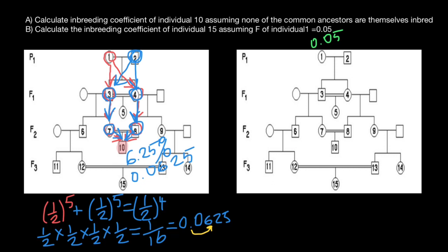We are now doing our calculations for individual 15. Again we start from individual one. So our first loop would be as follows — one path here, another one here, another one here through the mother's side. And through the father's side: one pathway here, another pathway here, another pathway here, and another pathway here.